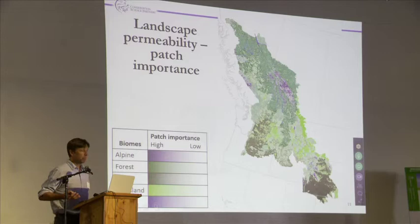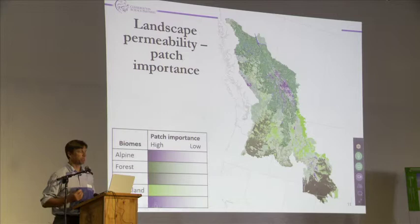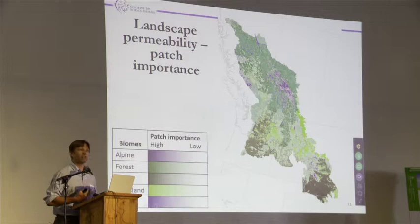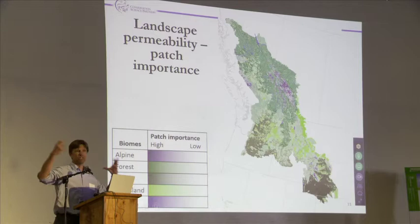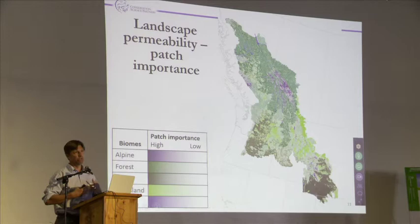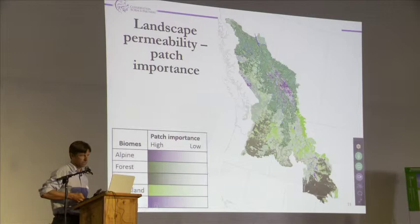This is what it looks like — the first broad, complete perspective done in a consistent way. What I'm showing here is the patch importance from a patch-centric perspective. These patches are made up of different biomes — five different biomes — shown on the left. The saturation of the color reflects the importance: a darker, deeper hue means this is more central, it's bigger, and it's more central within the configuration. This is a different view of connectivity, emphasizing what we're trying to connect.